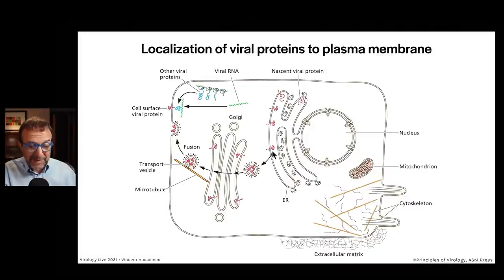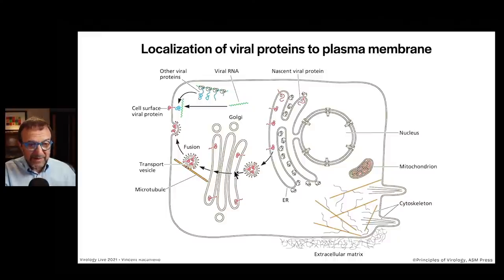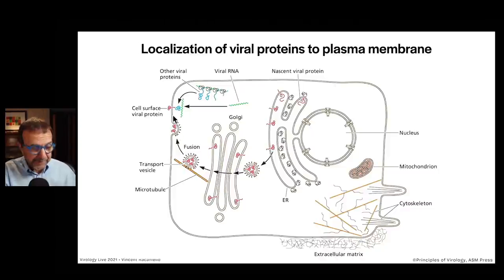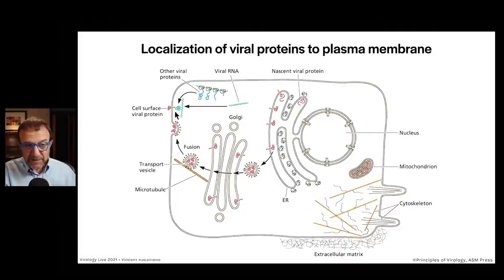They can be put on the plasma membrane by a vesicular transport system. A vesicle pinches off from the ER containing these proteins, moves through the Golgi — a series of stacks of elongated membrane structures — and the vesicle fuses with one. Eventually the final vesicle moves via the microtubule system to the plasma membrane, and that viral or cell protein ends up on the surface. If it's a viral glycoprotein or spike, the viral RNA and other viral proteins coalesce with it to assemble viral particles.